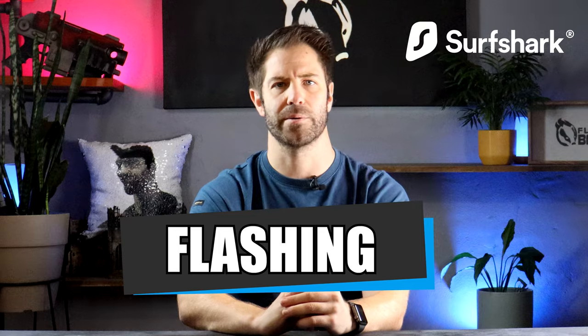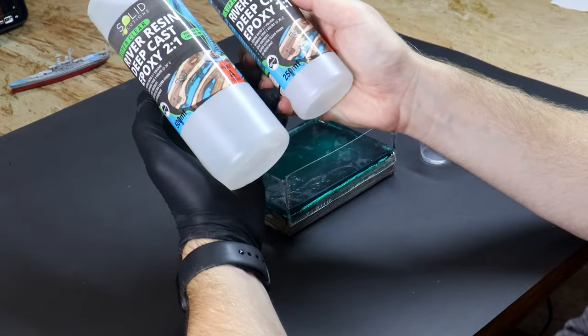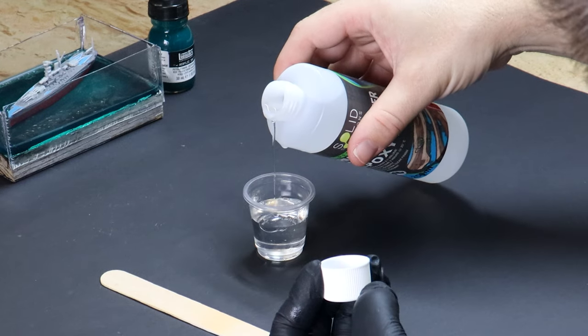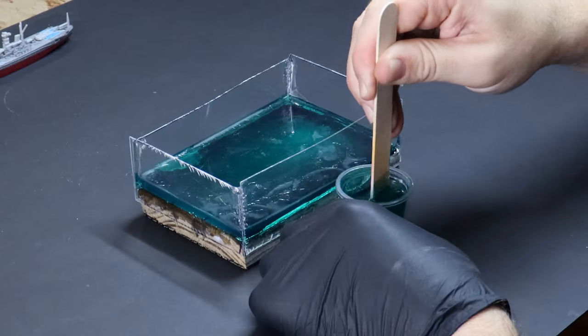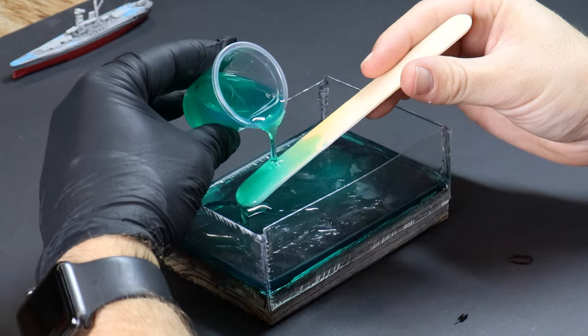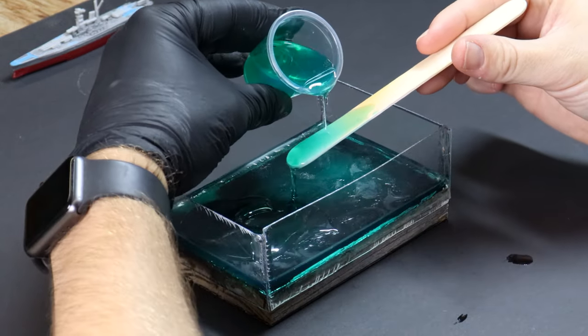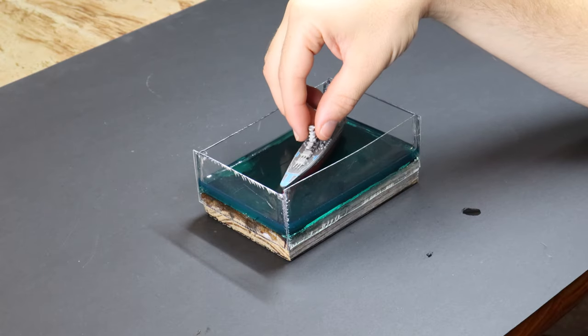Now, where was I? I've been recommended Solid Solutions Deep Cast Resin, so I'll try topping up the remainder with this. We match the ink, give it a swirl and pour. I should probably wait a little longer before I try to position the boat, but we are on a roll and feeling impatient, so in she goes.